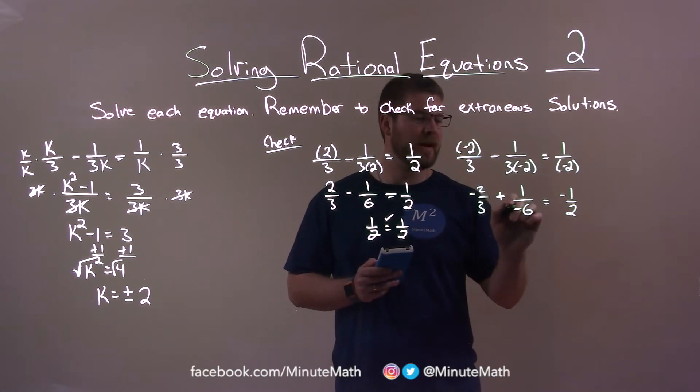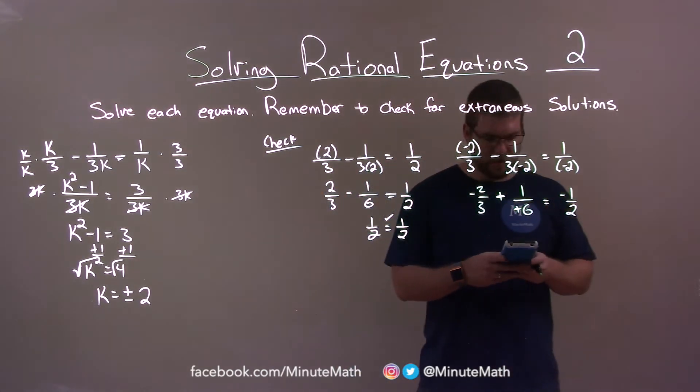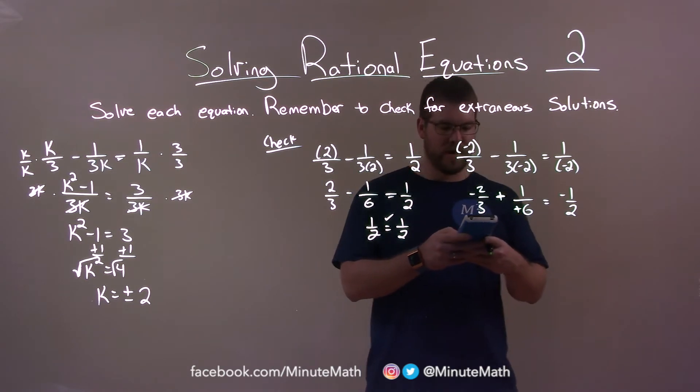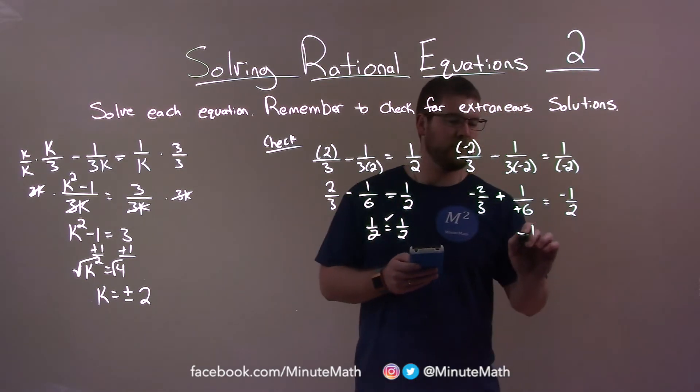Minus a negative 6 is adding a positive. So, negative 2 thirds plus 1 sixth should be negative 1 half. But let's just double check here because I have the calculator. And we do get negative 1 half.